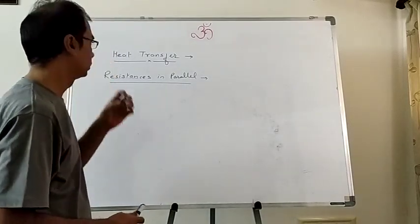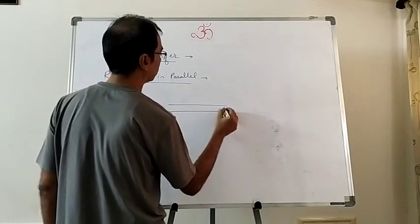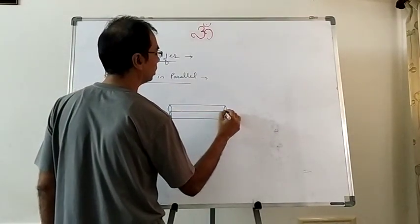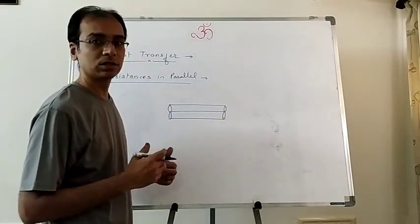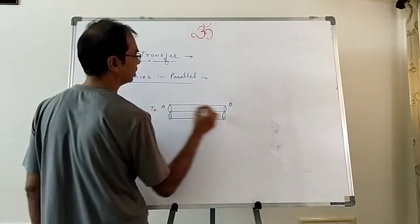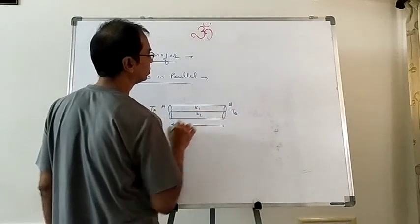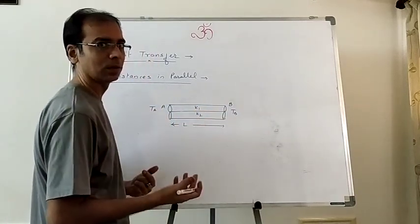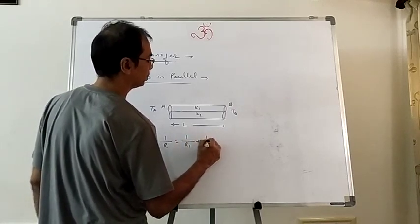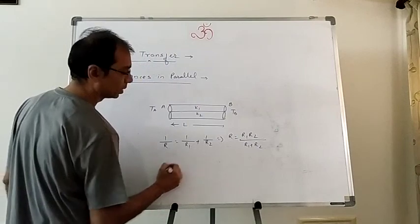Now resistances in parallel — same as in current electricity. Two rods are connected in parallel between ends A and B. In a parallel circuit, the temperature difference T_A − T_B is the same across both rods, just as potential difference is the same in parallel. The rods can have different conductivities k1, k2 and areas A1, A2. The effective resistance: 1/R = 1/R1 + 1/R2, or R = R1·R2/(R1+R2), where R1 = L/(k1·A1).